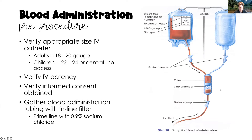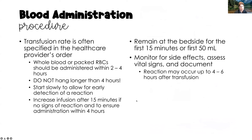The Y-set tubing has two spiking sides that merge into a main line. Spike and hang your 500 mL normal saline on one side, prime the entire line with normal saline while keeping the other side clamped. Then spike the blood component bag on the other side, close the normal saline roller clamp, open the blood roller clamp, and prime the entire line including the filter with blood.